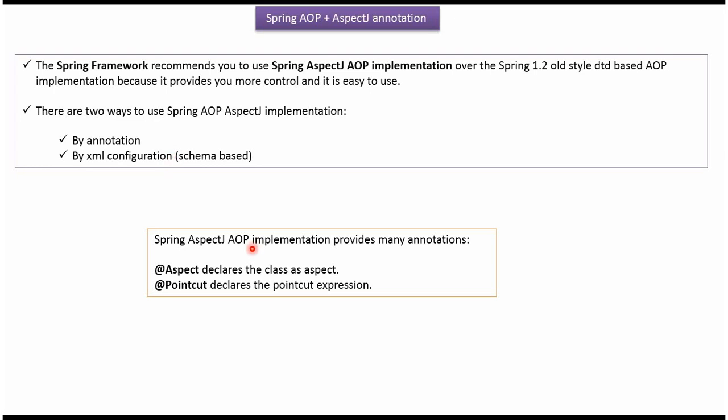Spring AspectJ AOP implementation provides many annotations. Here you can see two annotations. The first one is the @Aspect annotation, which declares the class as an aspect. And the second one is the @Pointcut annotation, which declares the pointcut expression.